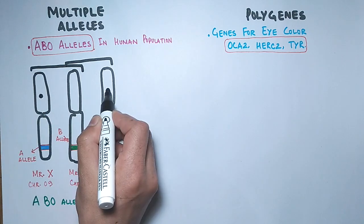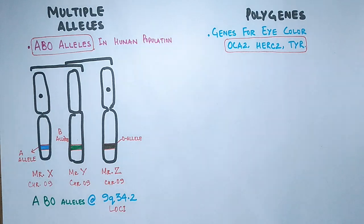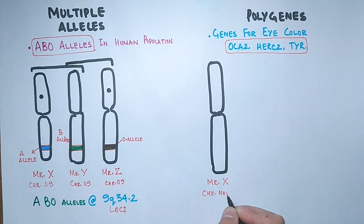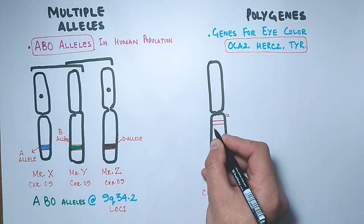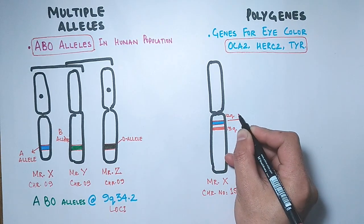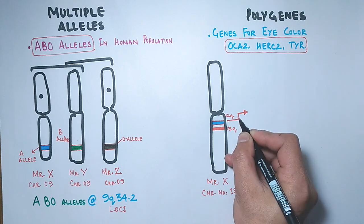Now let's jump to the polygenes. When we analyze the same Mr. X individual for its chromosome number 15, we see it has got two genes on its Q arm between 12 and 13 portion, that means at different loci.